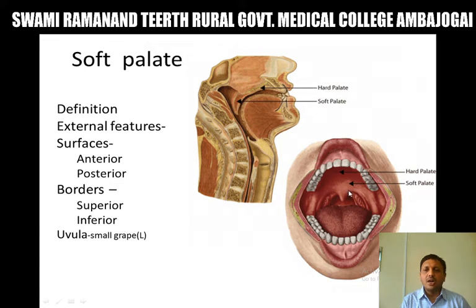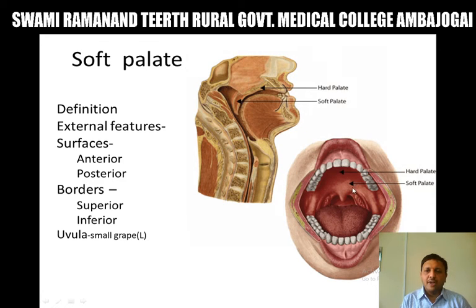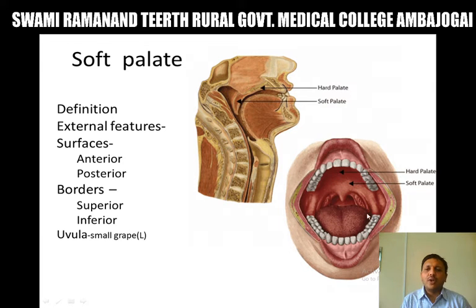From the base of the uvula, it gives out two folds of the mucous membrane containing the palatoglossus muscle and palatopharyngeus muscle. The anterior fold forms the anterior pillar, also known as the palatoglossal arch. The posterior fold forms the posterior pillar, also known as the palatopharyngeal arch. The palatoglossal arch extends from the base of the uvula, passes laterally and downwards, and reaches the side of the tongue at the junction of the oral and pharyngeal part of the tongue. The palatopharyngeal arch also passes laterally and downwards and finally forms the wall of the pharynx.